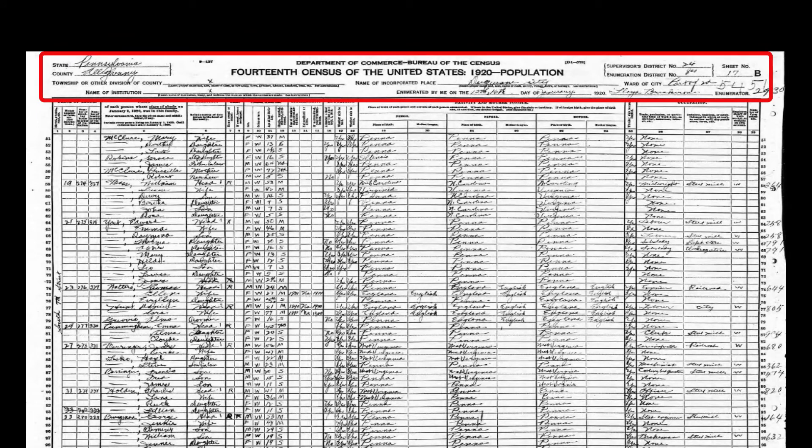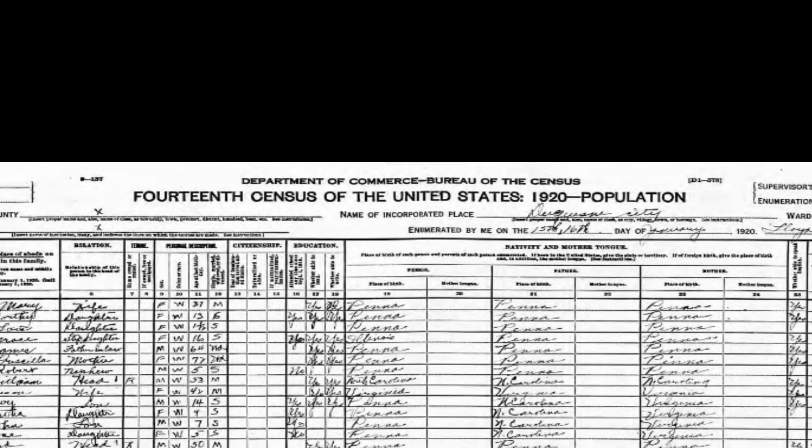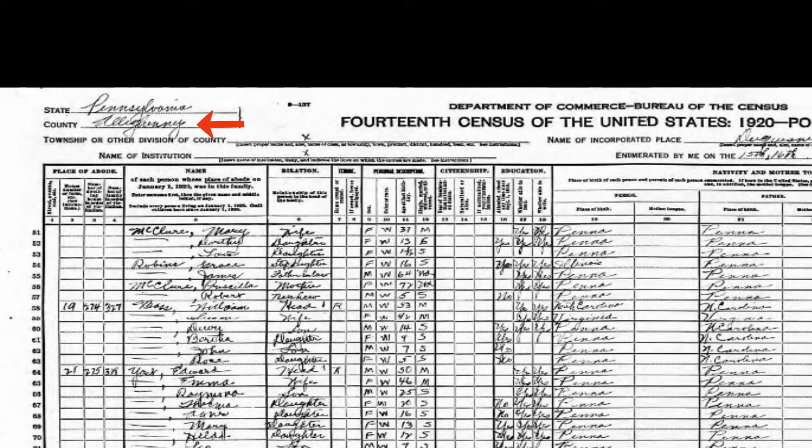Now we're going to go over to my computer and take a very quick look at an overview of what census records look like for one of the census years. This is a full census page. Up top there's a header — almost all census years have one, but each year looks a little different. It tells you this is the 14th census, 1920. Over to the left it tells you the state and county where the census enumerator was working; over to the right, the city and the name of the census enumerator. The rest of the page is information about all the people visited.